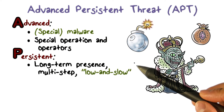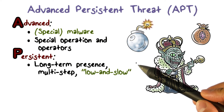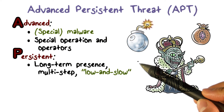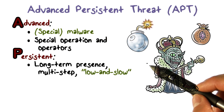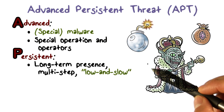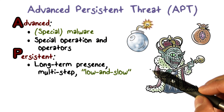APT is persistent, meaning that once the malware gets into an organization, it's going to stay there for a long time. It typically involves multiple steps, and each step is low and slow to avoid detection. For example, rather than sending out the design of the airplane — which is a large volume of data — to the internet at once, the APT can break the data into multiple chunks and send each chunk to the internet whenever there is a user connecting. The transmission of each chunk of data will not raise any suspicion.